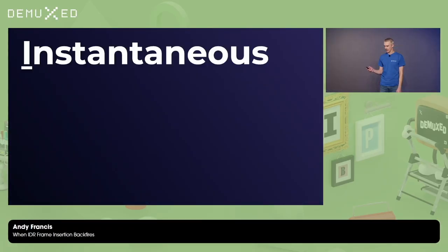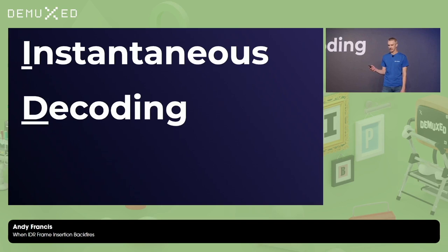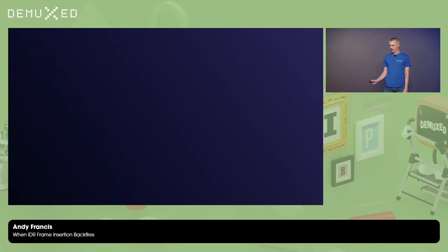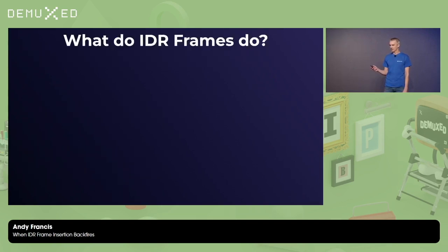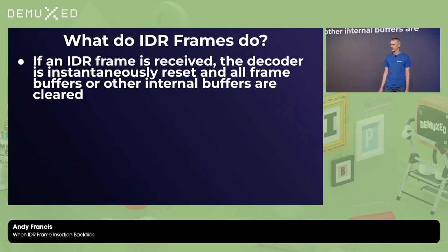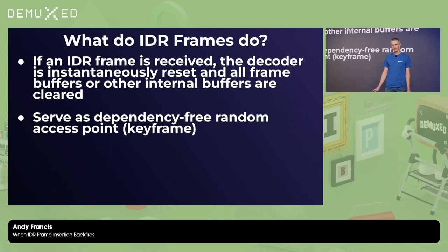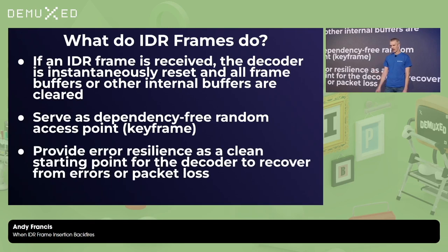Some quick background to set the stage. IDR stands for Instantaneous Decoding Refresh. If an IDR frame is received, the decoder is instantaneously reset and all of the frame buffers and other internal buffers are cleared out. They're not dependent on any other frames for decoding, so they serve as random access points within a stream. They also provide some error resilience as a clean starting point for the decoder to recover from errors or packet loss upstream.